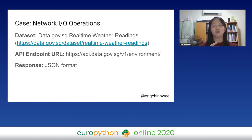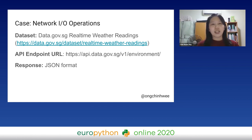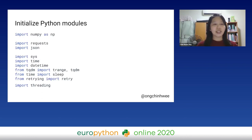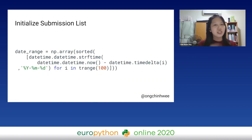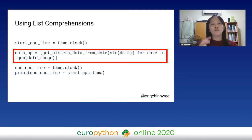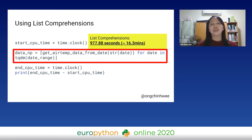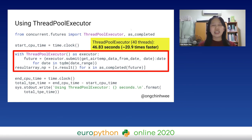Here are some examples of using the concurrent.futures module. The first case is getting data from an API — I use the data.gov.sg real-time weather readings, with responses in JSON format. I initialize the module, initialize the API request task, and use the threading module to monitor thread execution. Using list comprehension it takes about 16.3 minutes to process a certain number of dates. When using ThreadPoolExecutor, the speedup is about 20.9 times compared with list comprehension — quite significant.